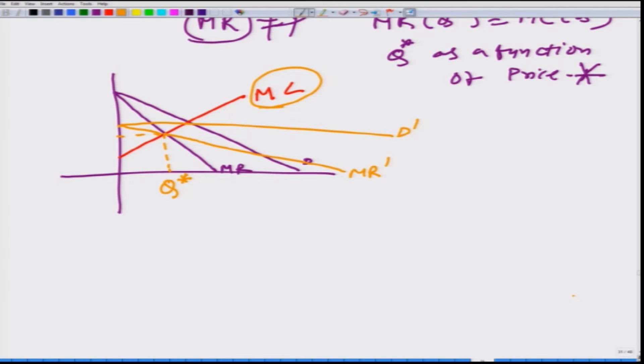Now, let us look at what happens to the price. In the first market that we discussed, price is going to be P, and in the second case the price is going to be P dash.